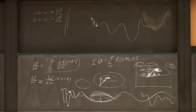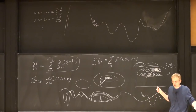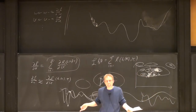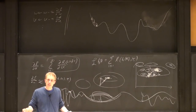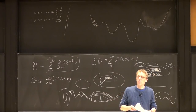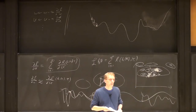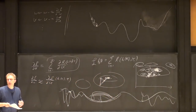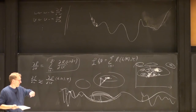One nice thing about this: when ensembling neural networks, you don't even need to subsample data like in bagging. Because you initialize randomly, you start in a totally different part of the space and end up in a different local minimum. Networks trained this way tend to have similar error rates but make very different mistakes, making them great for ensembling. Training five networks and averaging their outputs gives a huge improvement, useful in competitions like Kaggle.